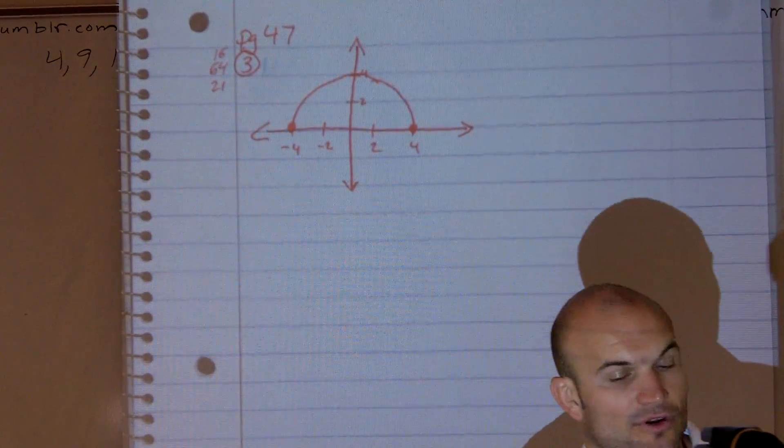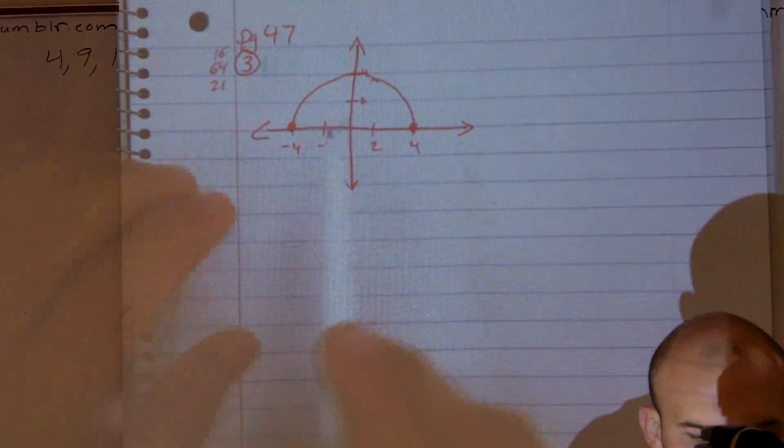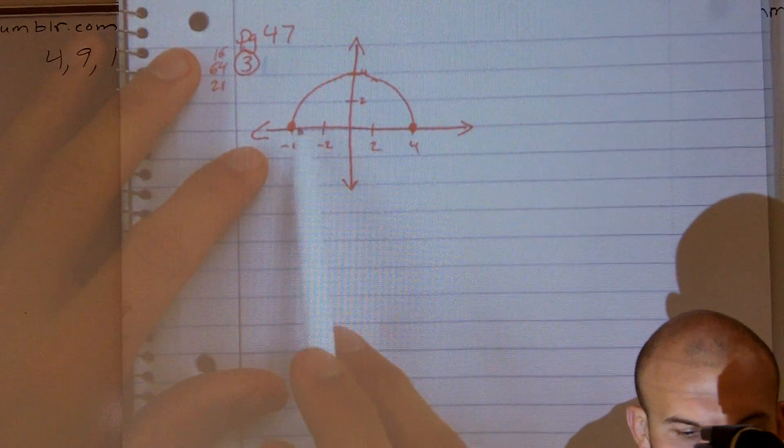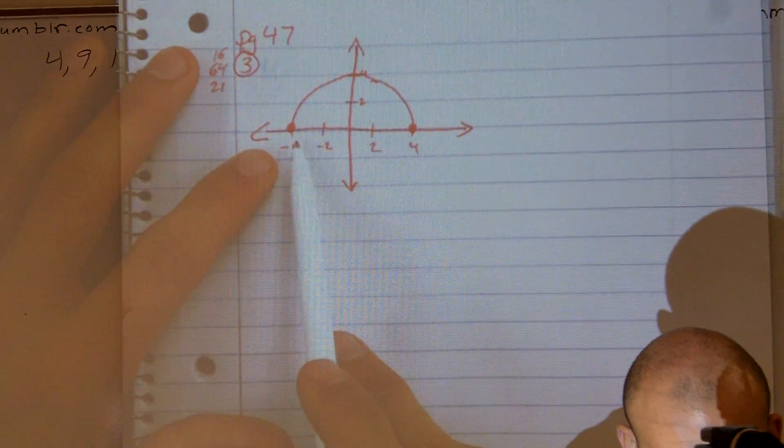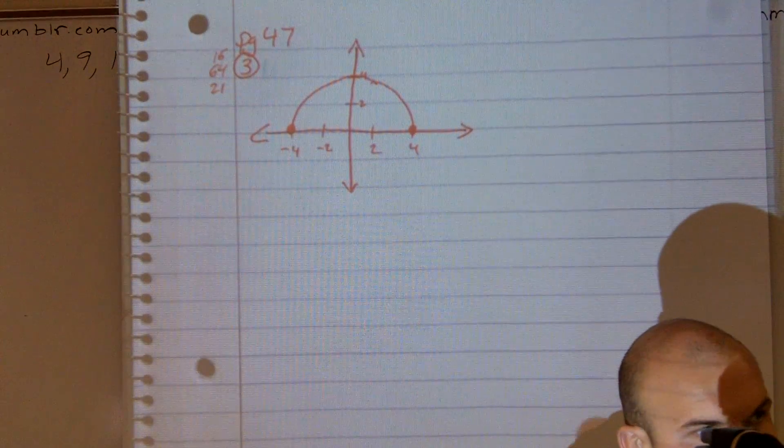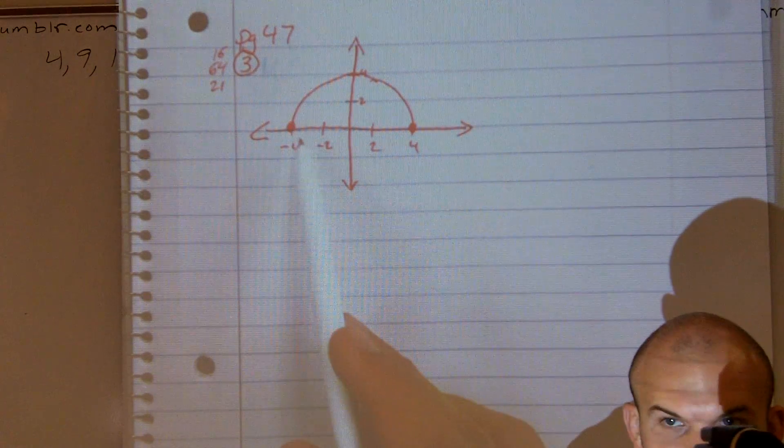Or at least that are defined for your function. So here we have a continuous graph that we need to look at and see, all right, for what values is x defined?